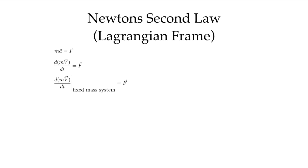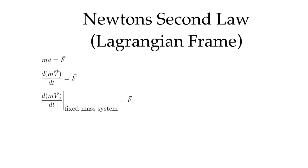The starting point is Newton's second law, and in the Lagrangian frame we're very familiar with this. ma is equal to F. It's a vector equation so it's going to have three components in a three-dimensional system.